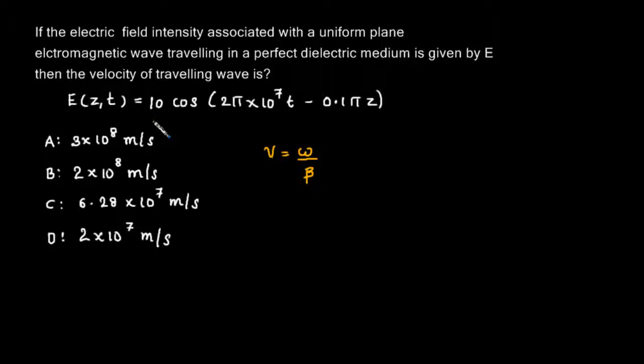It will be E naught cos of omega t minus beta z. This is the expression for a wave traveling in positive z direction. From this, by comparing or analyzing these two expressions, we can clearly see that omega is 2π × 10^7 and beta is 0.1π.